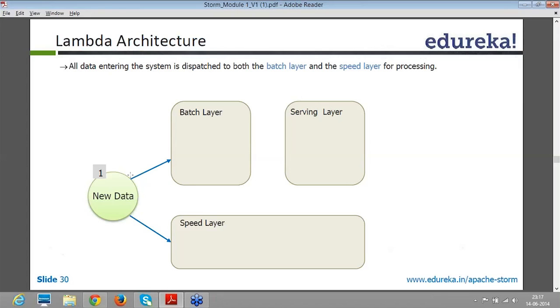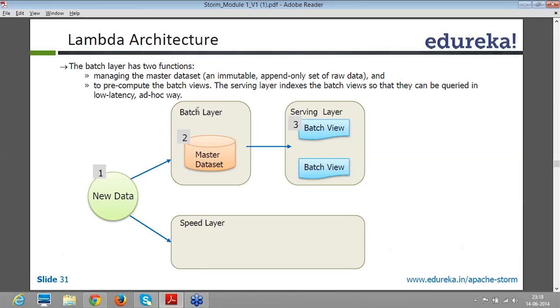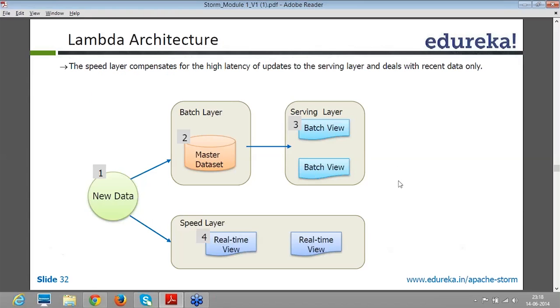So first you have the data coming into your data center, and then it can go to both. Second, it will go to the batch infrastructure where the data can be persisted into HDFS. Then you will run some workflows over that persisted dataset at periodic intervals. So then you come up with batch view of the actual data.